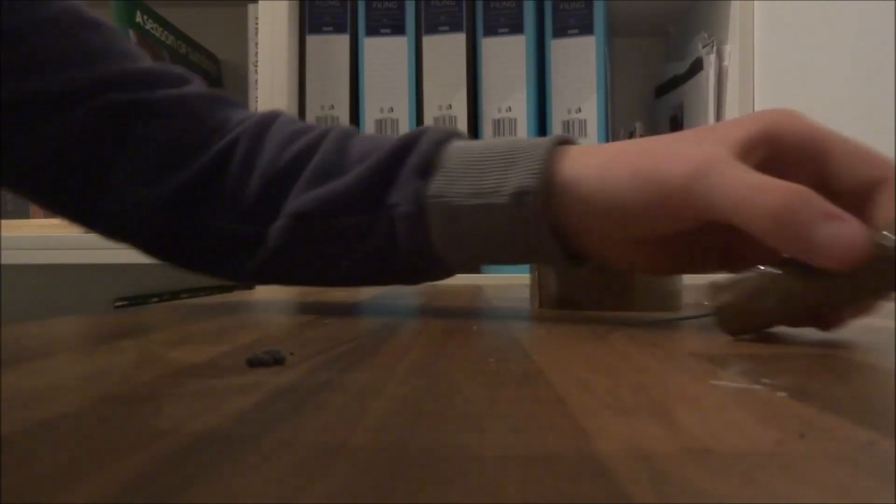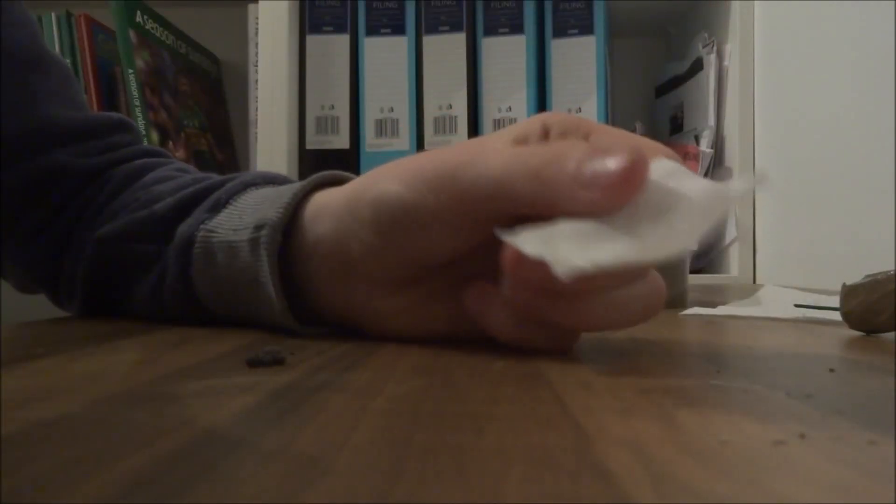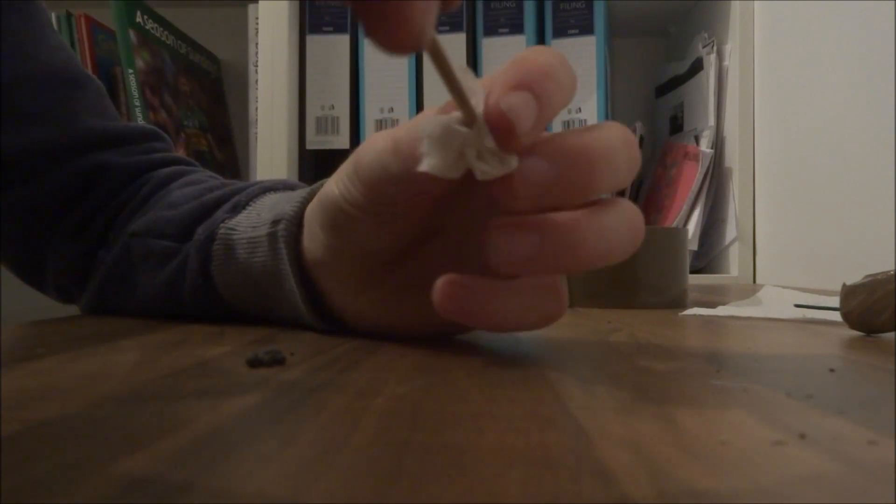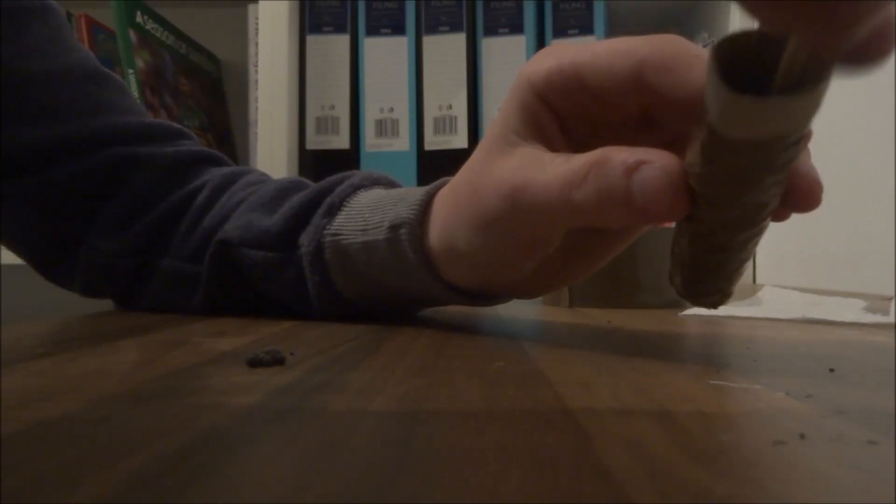You're gonna get a bit of tissue, tissue paper, toilet paper, and tear off a bit. That much, roughly that size. And then you're gonna fold it up like that, get it on the end of your skewer, and then just push it down there.